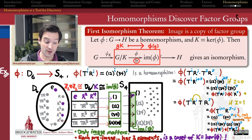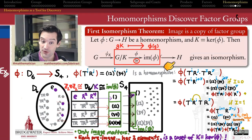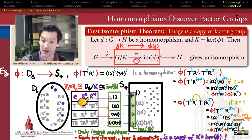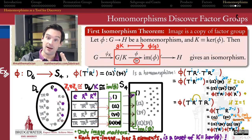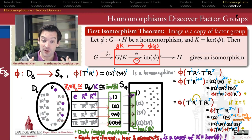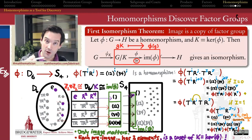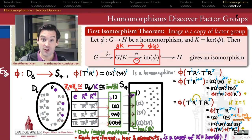This is the power of the first isomorphism theorem: it lets us focus only on the parts of the homomorphism that matter most. All differences accounted for by elements of the kernel are wiped out by passing to the factor group, and all elements of H not hit by the homomorphism are removed by focusing on just the image. What's left is a one-to-one onto function between the factor group and the image that respects the algebraic structure — an isomorphism. In the next video, let's look at the proof of the first isomorphism theorem in full.